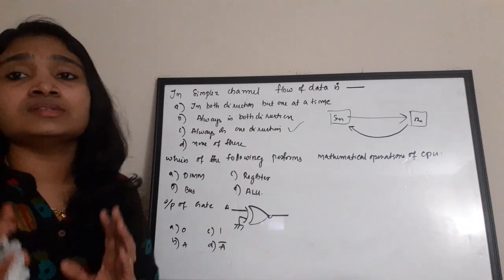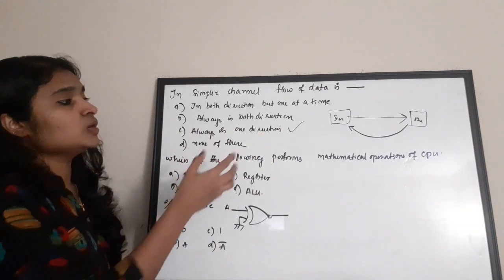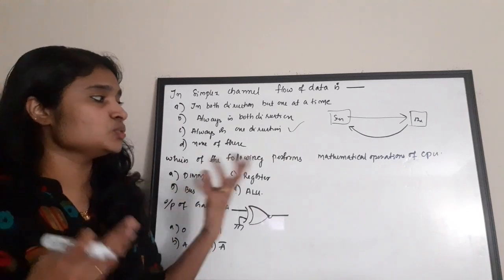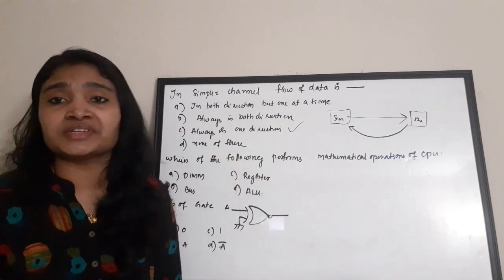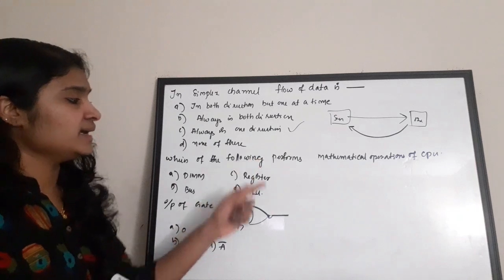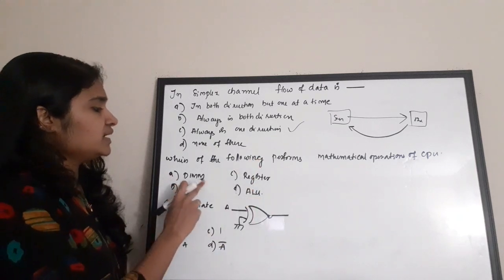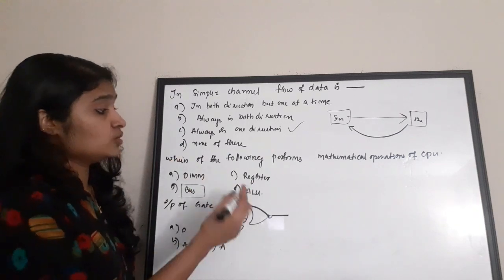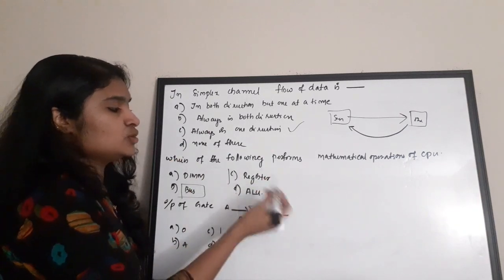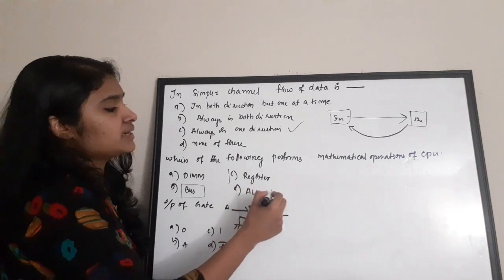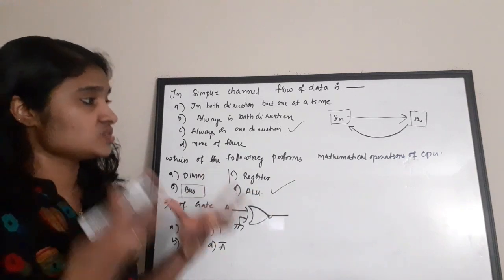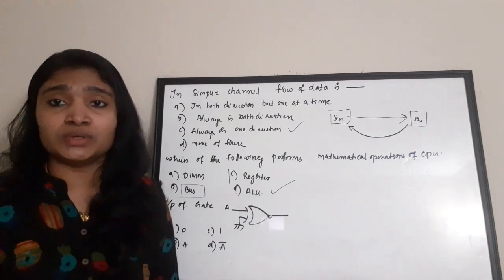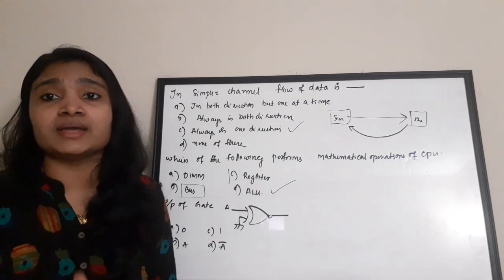Question: which of the following performs mathematical operations of the CPU? The unit which performs all the mathematical operations in general is the ALU. Options: DIMM — no; BUS — no, it is not performing any mathematical operations; Register — no. ALU is the correct answer. In all processors, ALU is the arithmetic and logical unit which performs all the mathematical operations. Correct answer is option A.